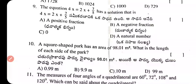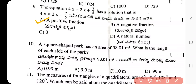Question 9: The equation 4x = 2x + 7/5. The solution is 7/10, which is a positive fraction. The correct answer is positive fraction.